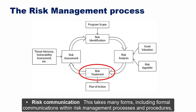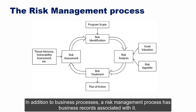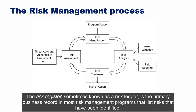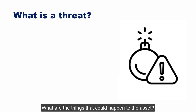Risk communication takes many forms, including formal communications within risk management processes and informal communications among risk managers and decision makers. The risk register — sometimes known as a risk ledger — is the primary business record in most risk management programs, listing risks that have been identified. A risk register typically contains a description of the risk, the level and type of risk, and information about risk treatment decisions.